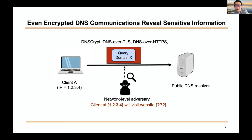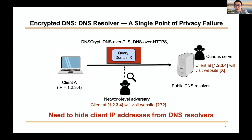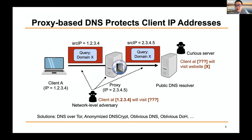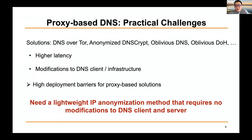Encrypting DNS addresses the privacy issue by encrypting DNS messages. Solutions like DNSCrypt, DNS over TLS, and DNS over HTTPS can prevent a passive adversary from seeing plaintext DNS requests and responses. However, they put trust in the public DNS resolvers, which can still see the user's real IP addresses and associate them with queries, making public DNS resolvers a single point of privacy failure. We want to hide client IPs from DNS resolvers for better privacy.